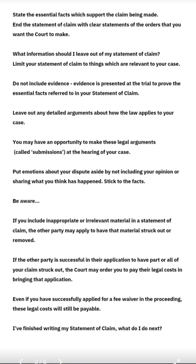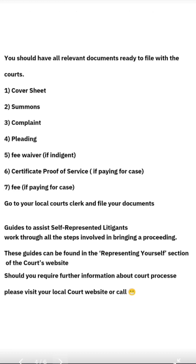Once you have finished writing your statement of claim, you should have all relevant documents ready to file with the courts. Number one is your cover sheet. Number two is your summons. Number three is your complaint. Number four is your pleading. Number five is a fee waiver if you're indigent. Number six is a certificate proof of service if you're paying for your case. Number seven is fees if paying for your case. Go to your local court's clerk and file your documents. Guides to assist self-represented litigants work through all the steps involved in bringing a proceeding. These guides can be found in the representing yourself section of the court's websites.